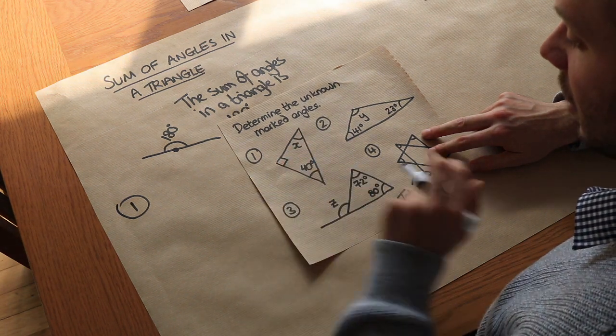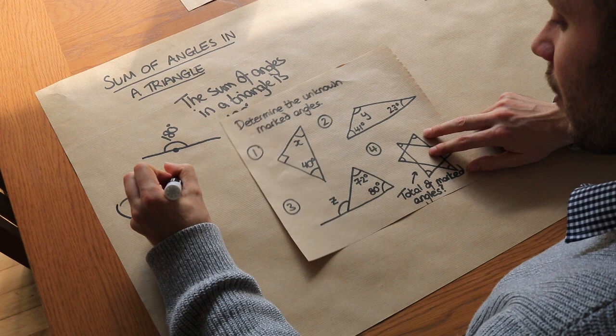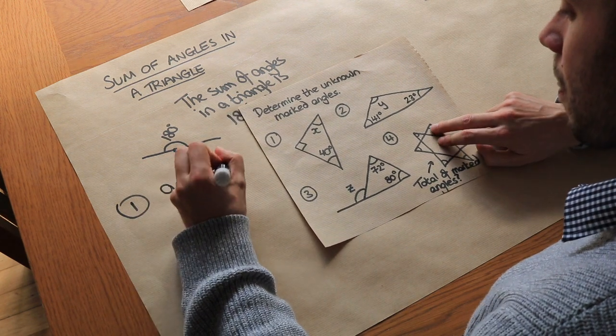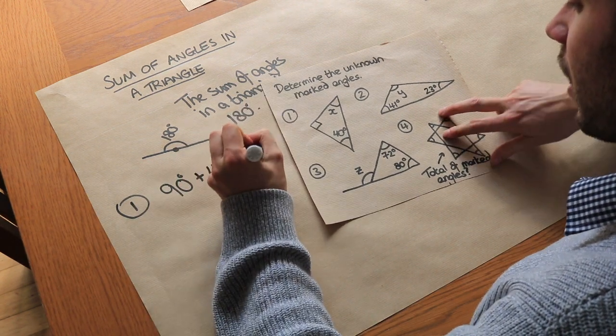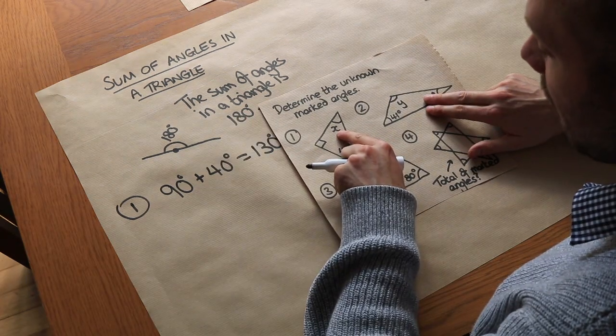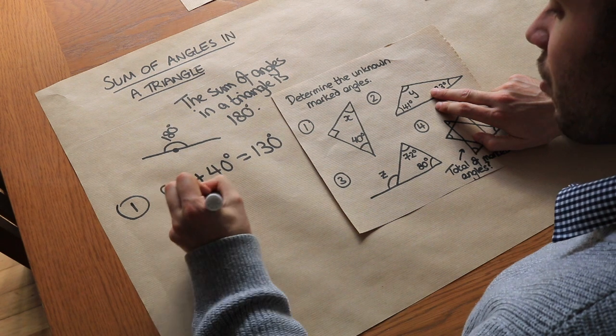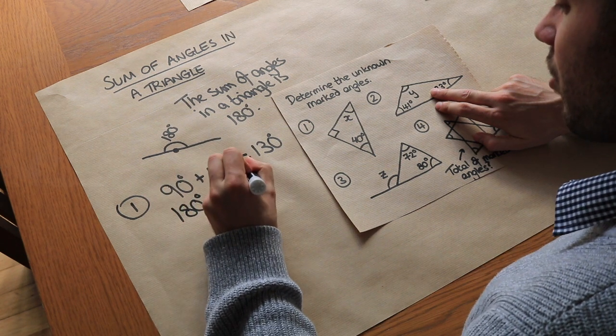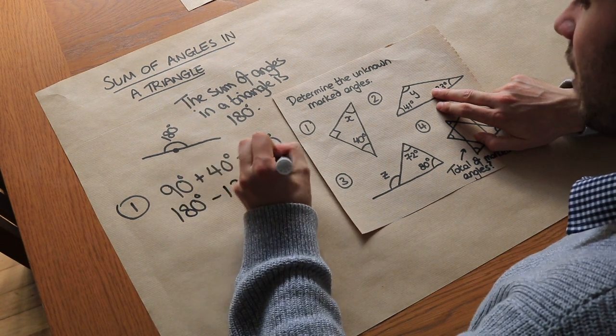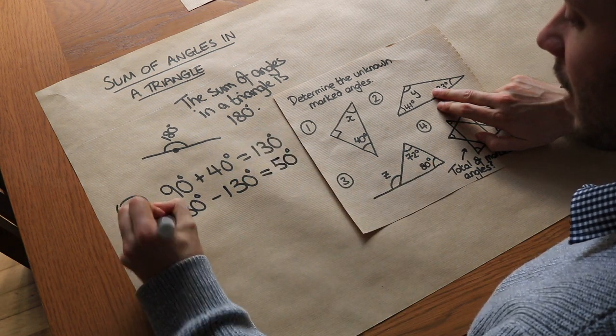Well they add up to 180 degrees so if we add the 90 and 40 together that gets us to 130 degrees and therefore x is what's remaining to get up to 180 degrees. So we can subtract 130 degrees from 180 degrees and that gives us 50 degrees. So that is x.